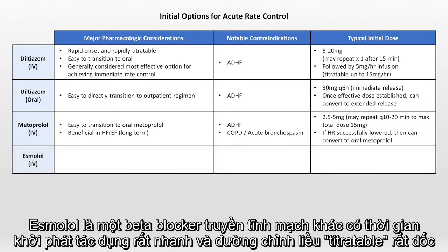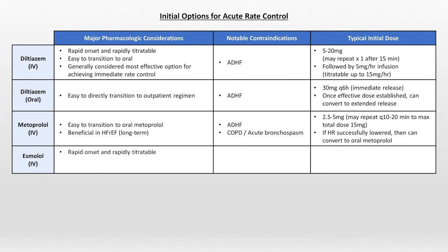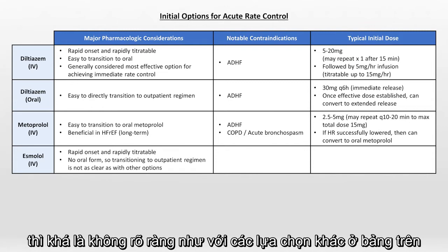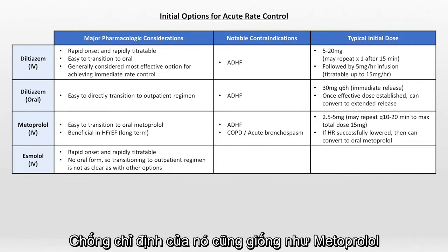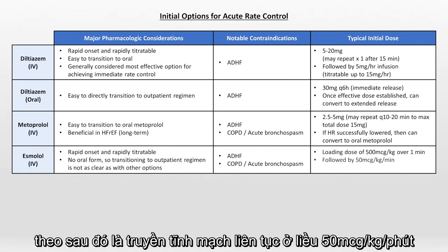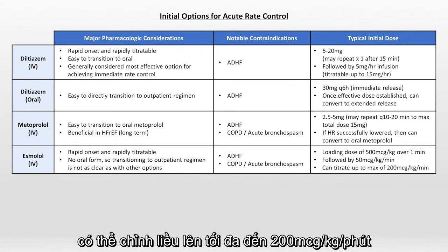Esmolol is another IV beta blocker with an unusually rapid onset and very rapid titratability due to its short half-life. There is no oral form of esmolol, so transitioning to an outpatient regimen isn't as straightforward. Its contraindications are the same as metoprolol. For AFib, it's typical to start with a loading dose of 500 micrograms per kilogram over one minute, followed by a continuous infusion at 50 micrograms per kg per minute, titratable to a max of 200 micrograms per kg per minute.